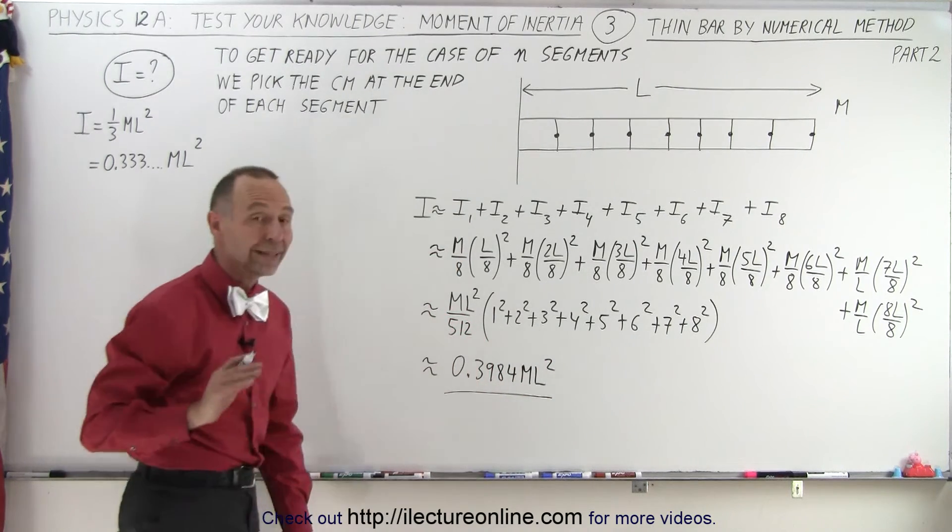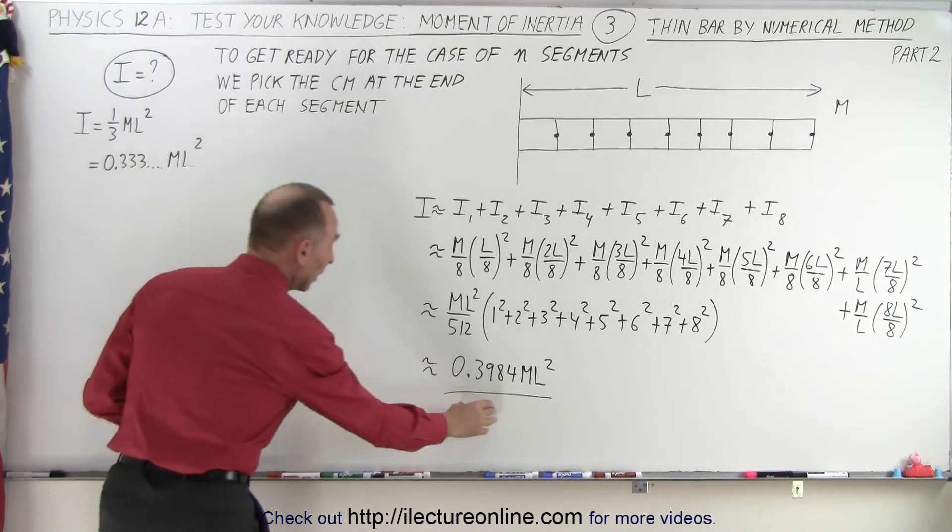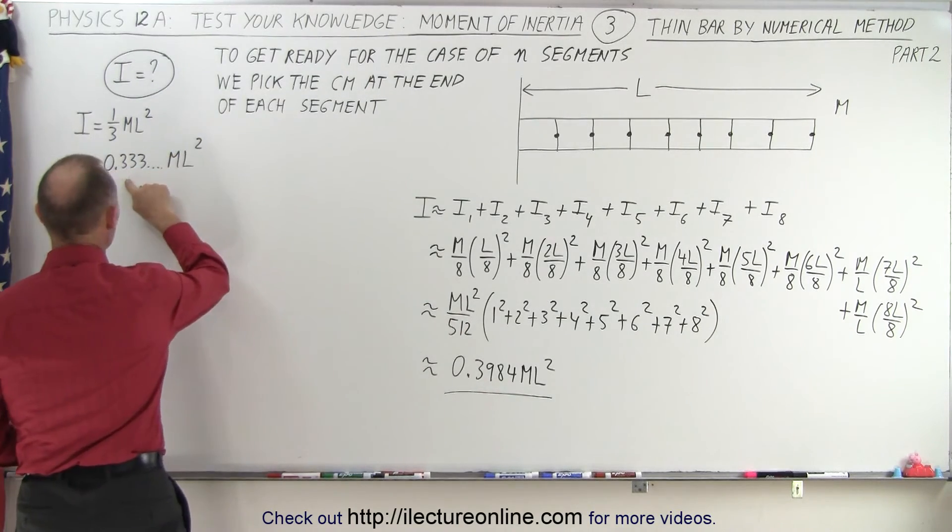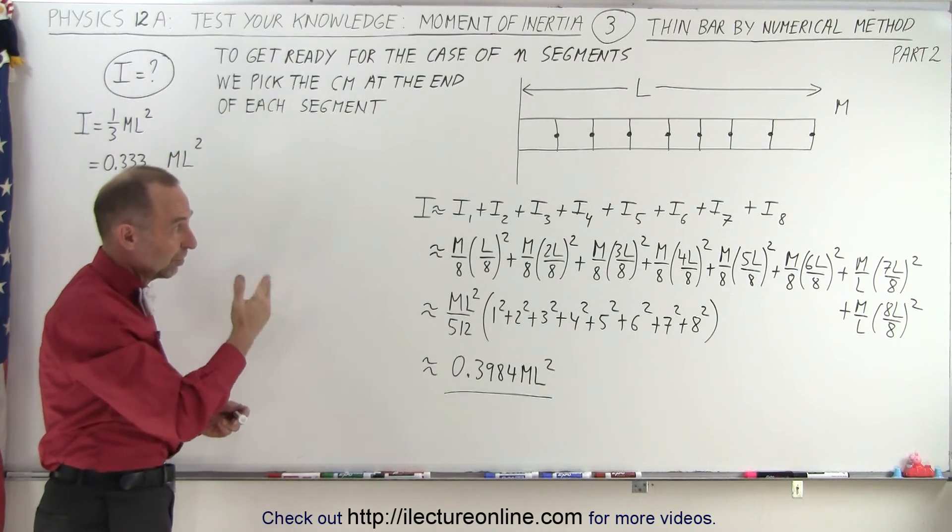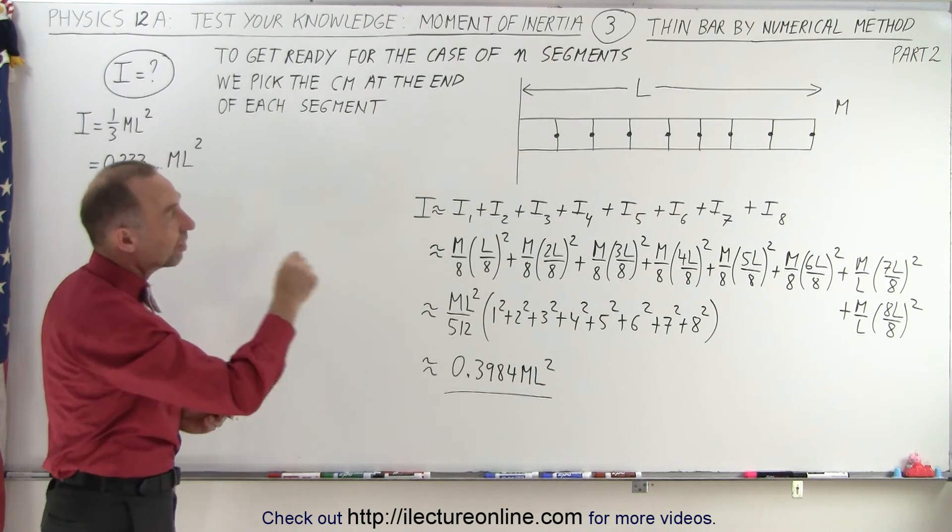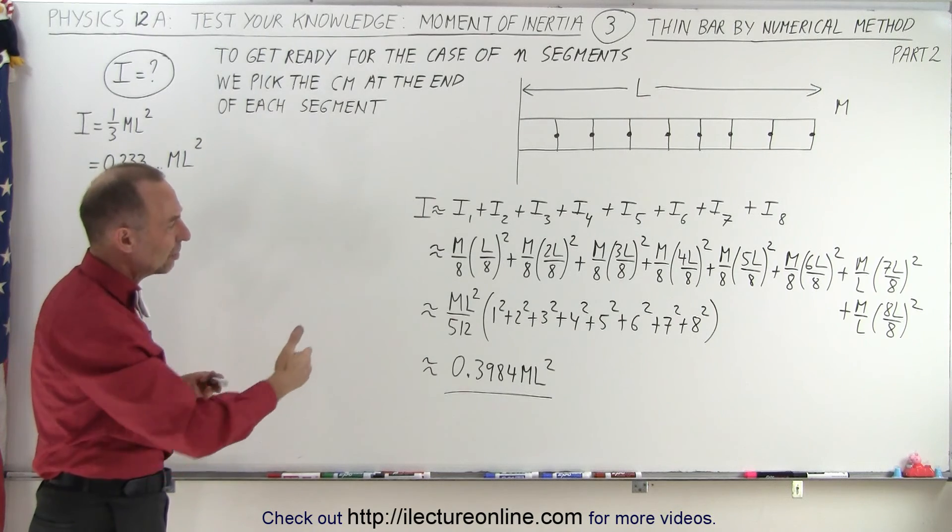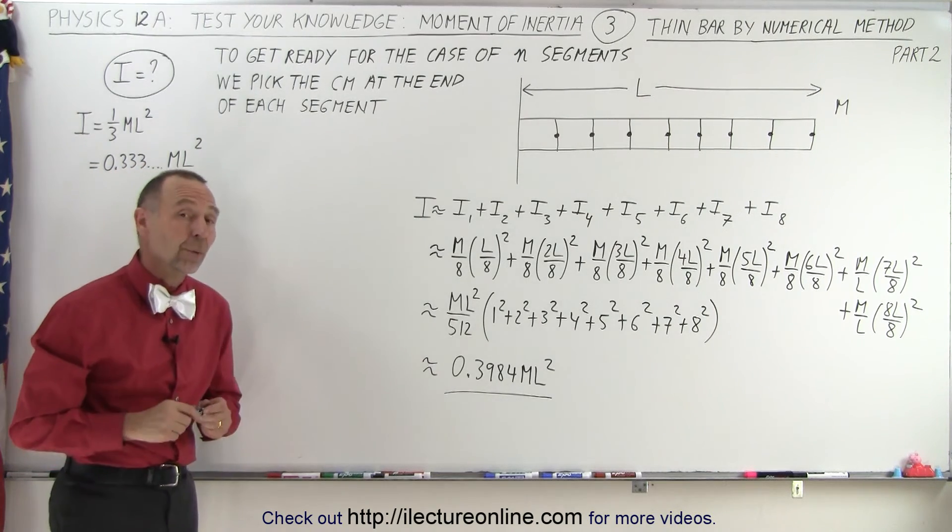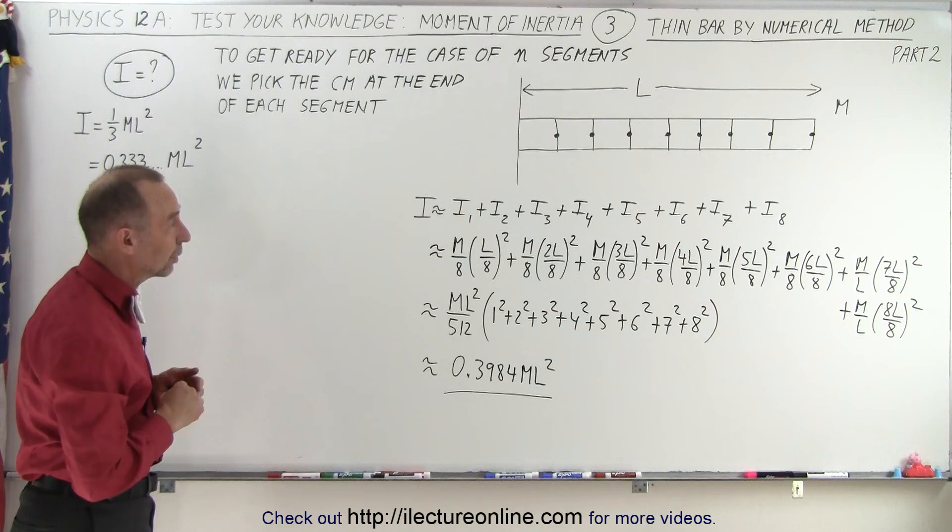So just like we predicted, the value we got was higher than what we want to have, because we picked the center mass of each segment at the end instead of at the middle. Of course, with a few segments like 8, our number is going to be off by quite a bit. That's relatively close.